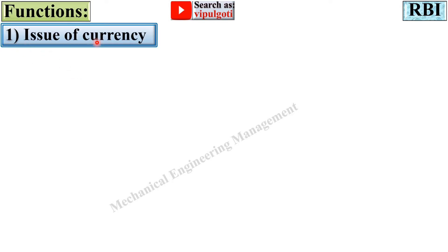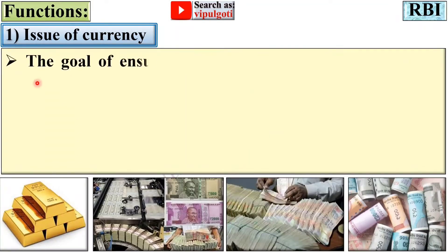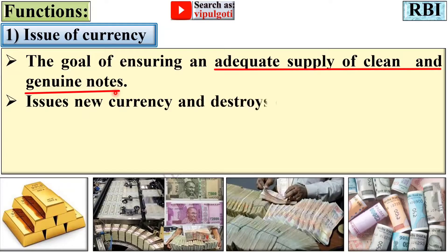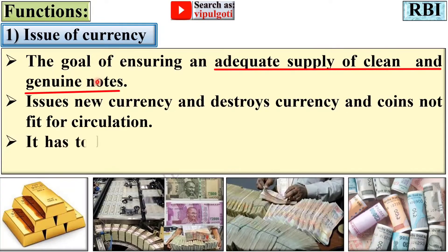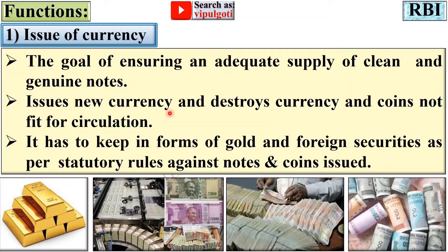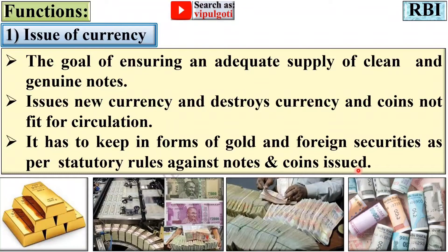The first function is issue of currency. The goal is ensuring an adequate supply of clean and genuine notes — this is the primary function of RBI. RBI issues new currency and destroys currency and coins not fit for circulation. It has to keep reserves in the form of gold and foreign securities as per statutory rules against notes and coins issued.